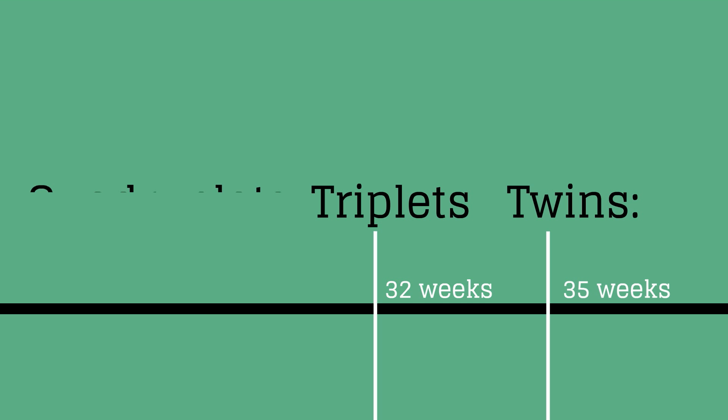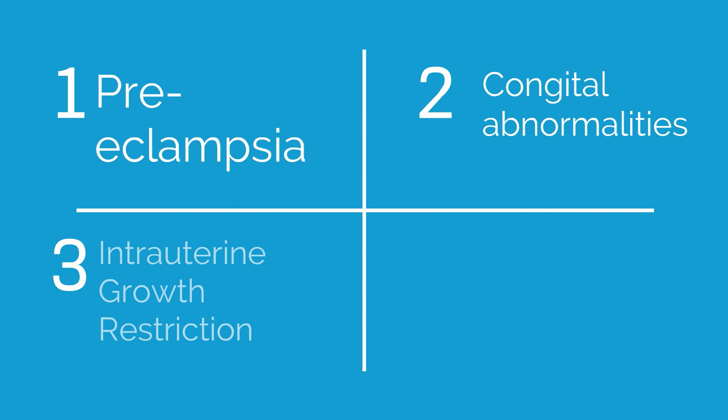All multifetal gestations are at an increased risk of prematurity. Twins are delivered at an average of 35 weeks, triplets at 32 weeks, and quadruplets at an average of 30 weeks. All multifetal gestations are also at increased risk of preeclampsia, congenital abnormalities, intrauterine growth restrictions, and placental abruptions.